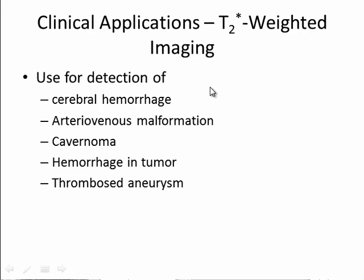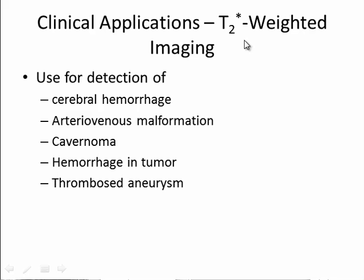Just briefly, some clinical applications of T2 star weighted imaging. This type of imaging is commonly used for looking at hemorrhage. If you have a large amount of bleeding in the brain or other organs, you will have a buildup of iron, which is paramagnetic, so it will de-phase your signal. Since T2 star weighted imaging is sensitive to de-phasing, the T2 star weighted image ends up being sensitive to that hemorrhage.